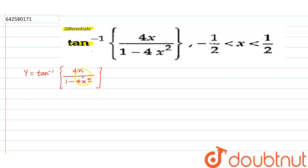Now, if we substitute 2x equals tan theta, then this whole function converts into 2 tan theta upon 1 minus tan square theta. And we know this is equal to tan 2 theta.